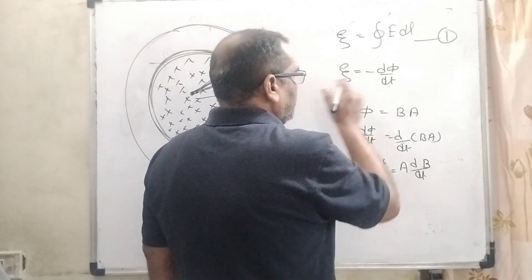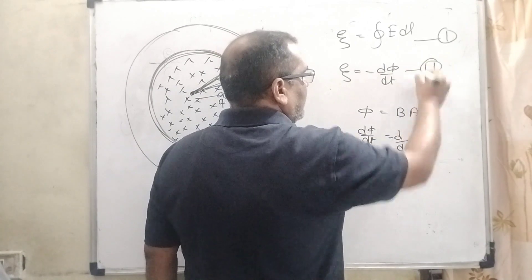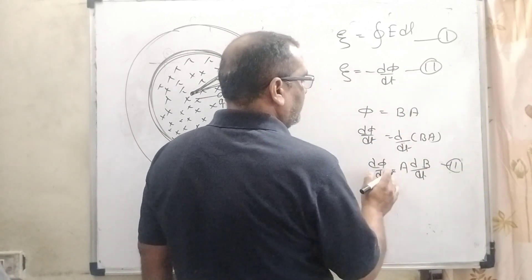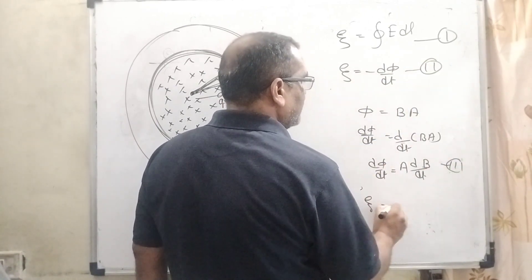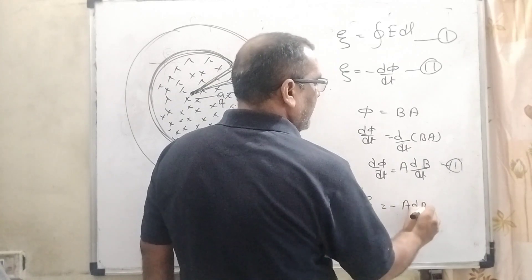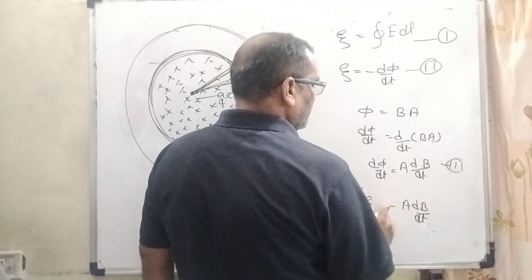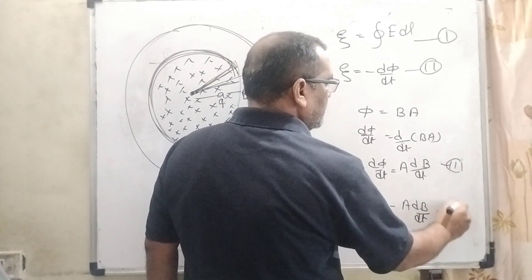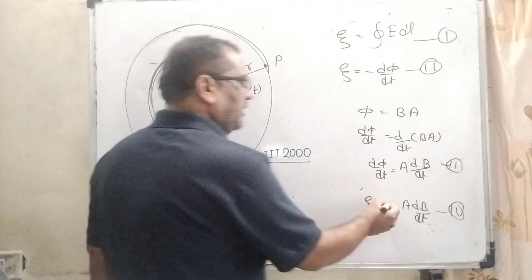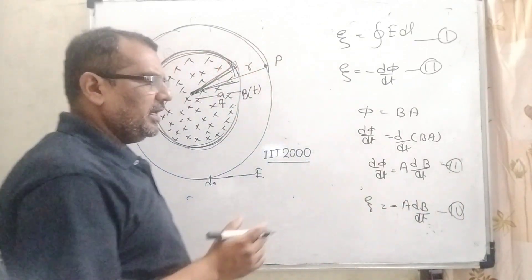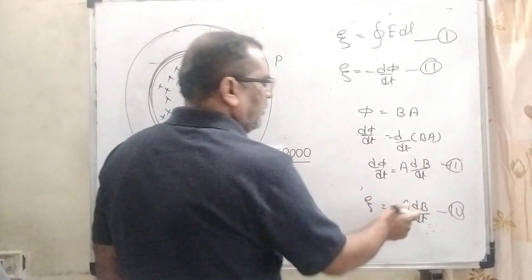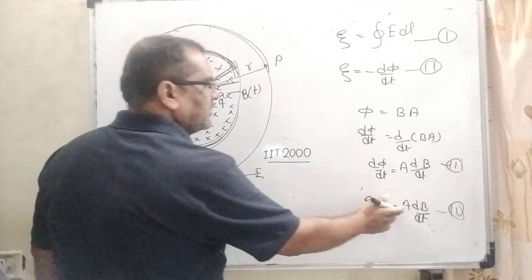Now we substitute into the second equation for dφ/dt. We get EMF = -A·dB/dt. This is the fourth equation. There's no need to show the minus sign because it only shows direction. We can take the modulus if we want to remove the minus sign.